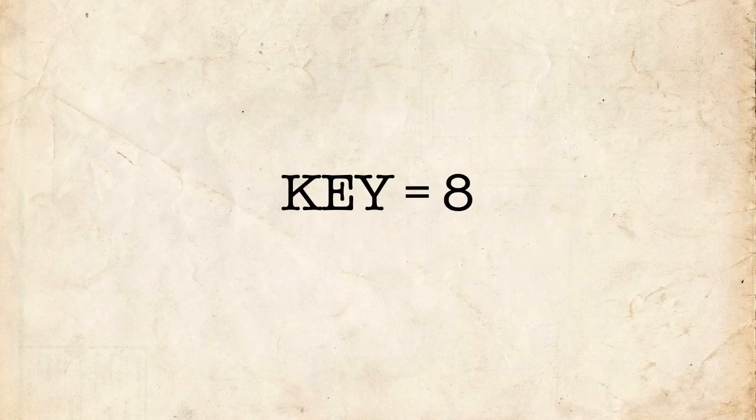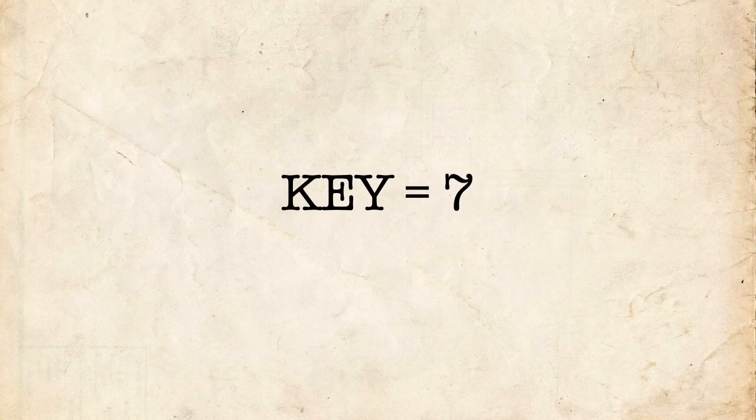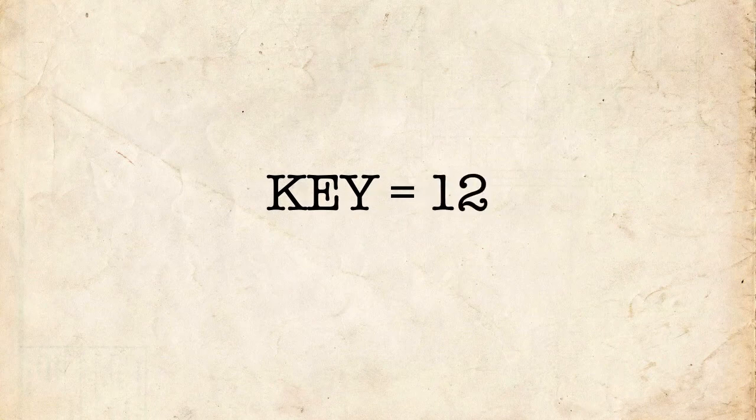With a Caesar shift, this is extremely easy, because all they have to do is try all 26 possible shifts, and they'll have it solved. In fact, probability suggests they'll have it solved before they've even tried all 26.